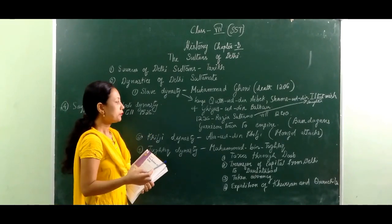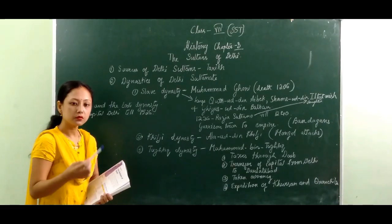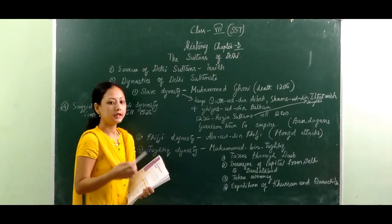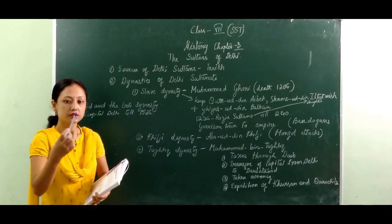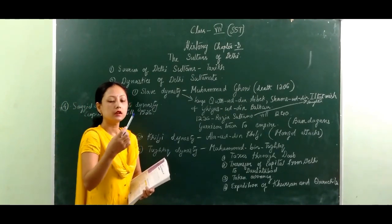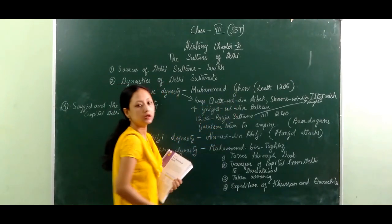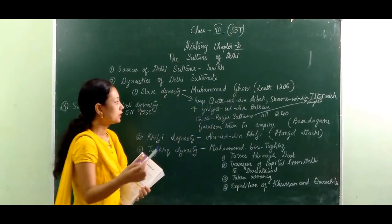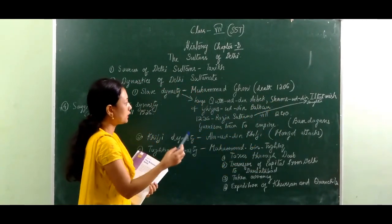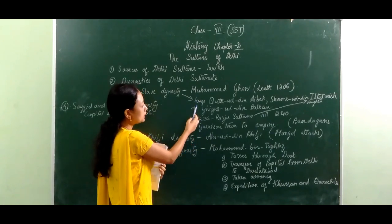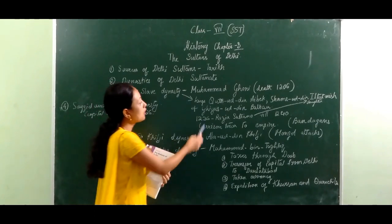The Slave Dynasty was named as such because most of the rulers had no heir — meaning no son. So they adopted some of the slaves and made them kings. We find that Muhammad Ghori had no son, and he died in 1206.